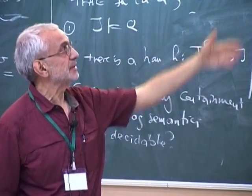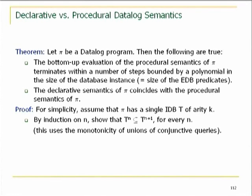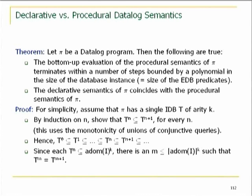We have an increasing sequence of k-ary relations on the active domain of the database, which is a finite set. Therefore this sequence must stop — it cannot keep increasing. There is some M, at most the size of the active domain to the k, at which we get T_M = T_{M+1}. So before we hit the active domain size to the k, the iteration will have stopped. This shows termination.